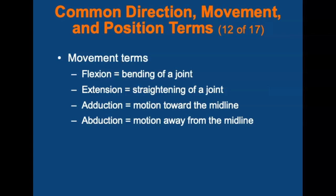The following terms relate to movement. Flexion is the bending of a joint. Extension is the straightening of a joint. Adduction is the motion towards the midline — you add it in. And abduction is the motion away from the midline.